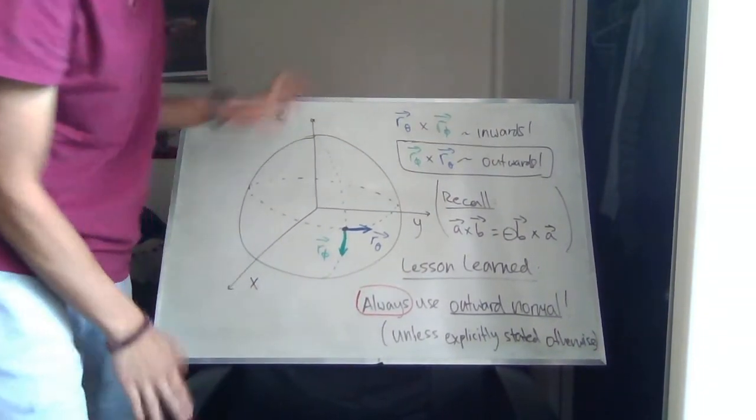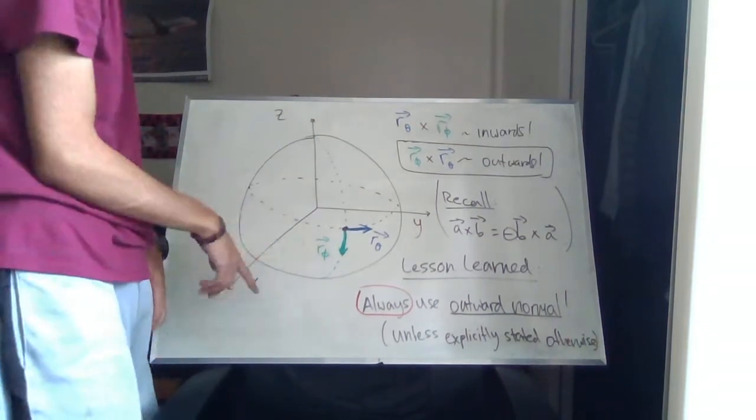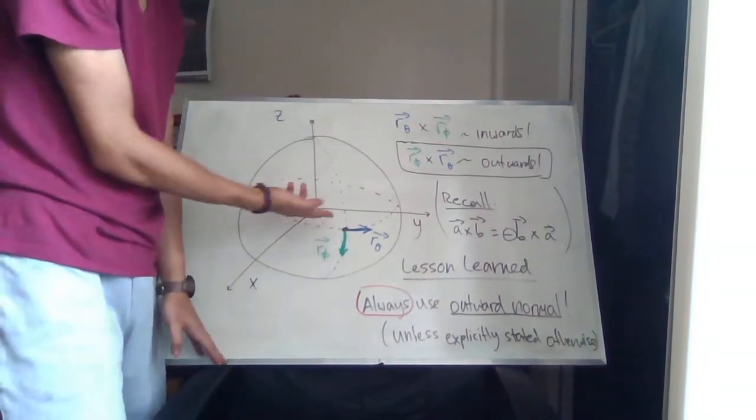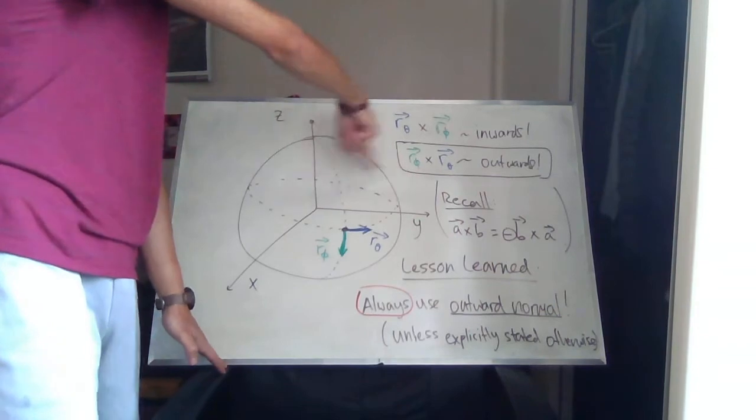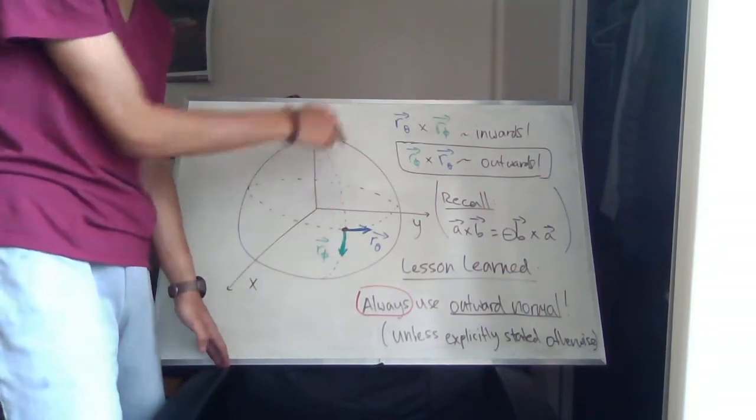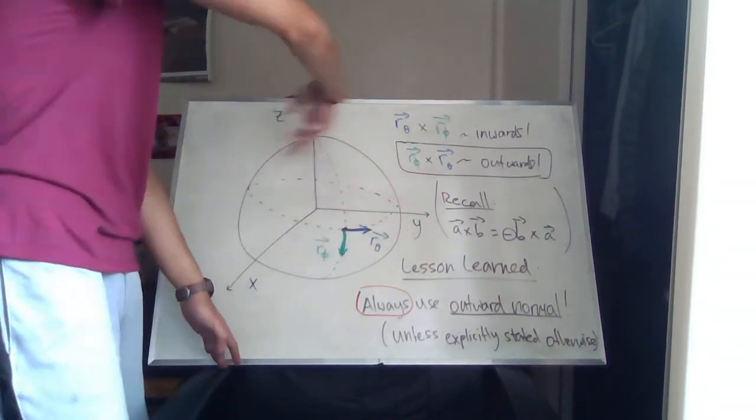Why are they inwards and outwards? Here's the sphere. rθ basically is going around in the θ direction and rφ is in the φ direction. rφ is top-bottom, rθ is going around.